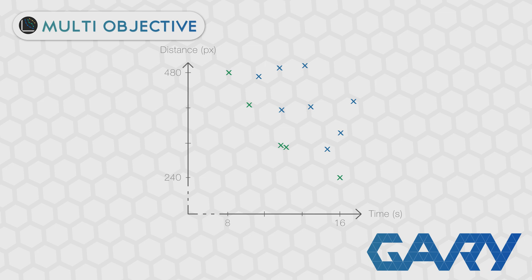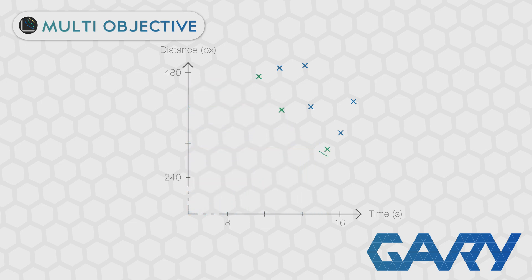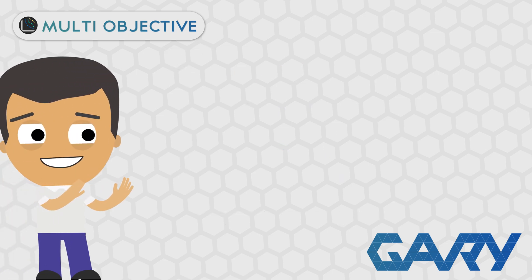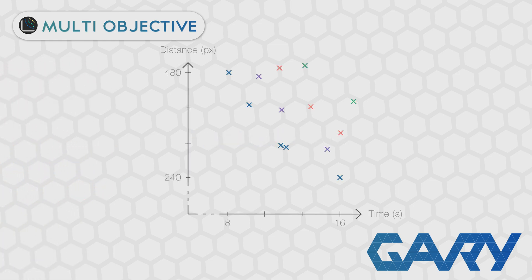Once we have our first front, we can temporarily remove these individuals from the equation and repeat the same process. This gives us a second front, and we can repeat as many times as needed until every individual in the population has been placed into one of N fronts. We now have a coarse way of ordering our individuals. But once we have all our fronts, we need some method of ordering individuals' fitness within a given front. While they are all technically equally fit, it's not practically true.